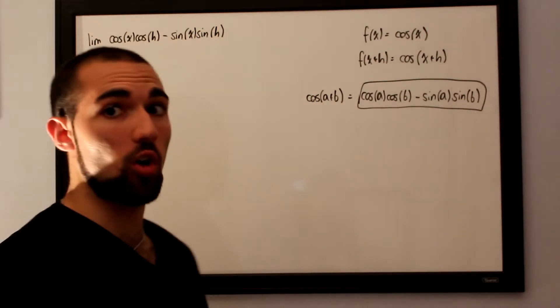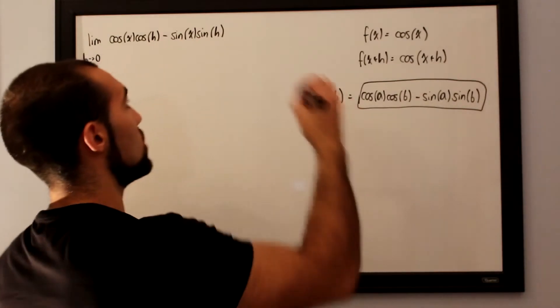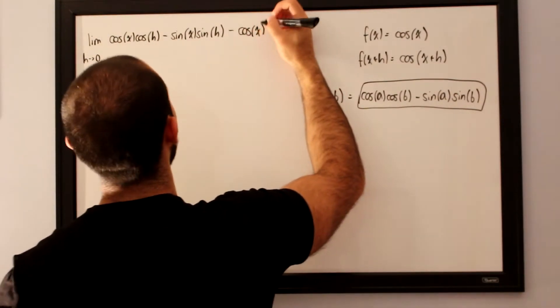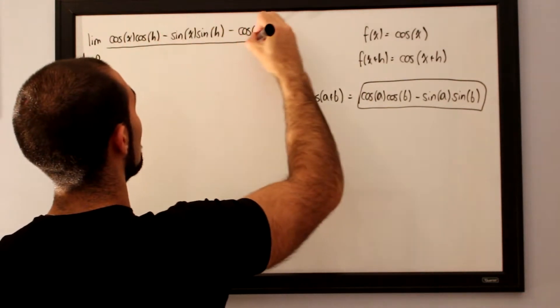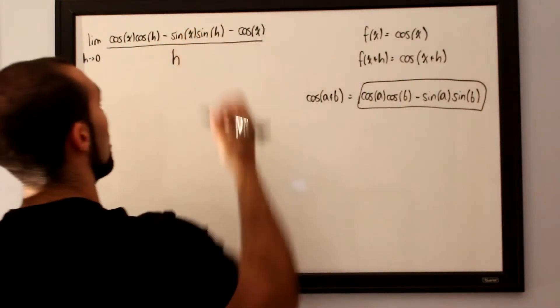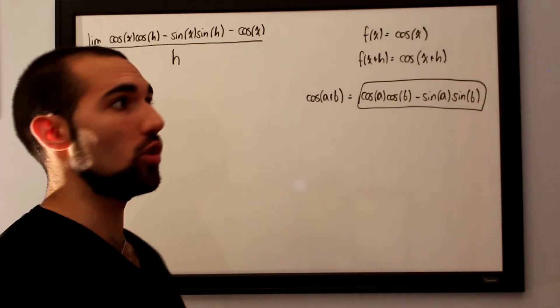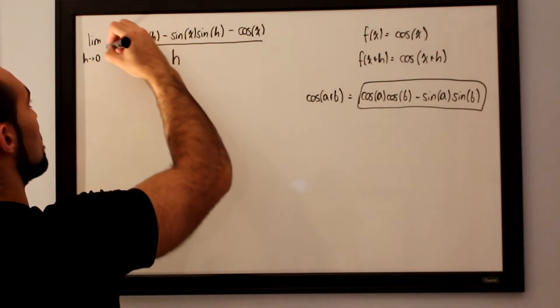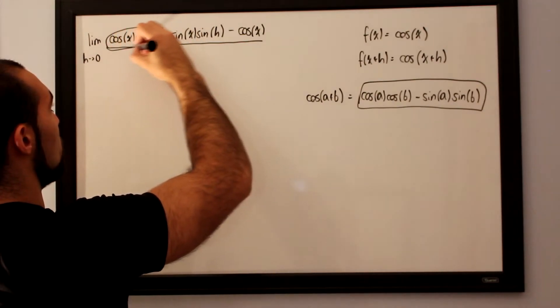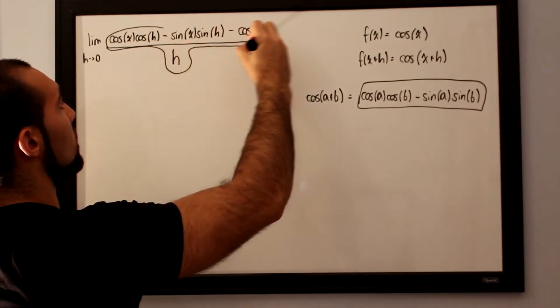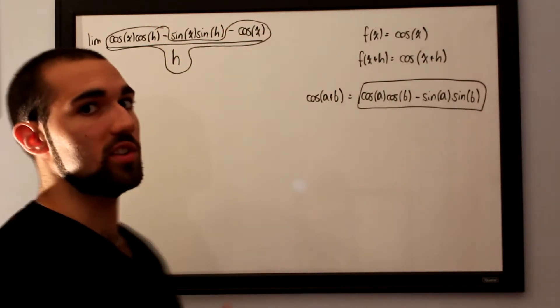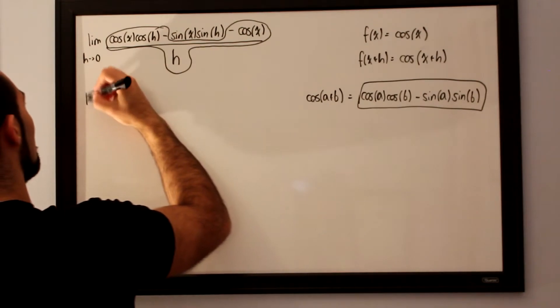And then we want to subtract off our initial function, which is simply cosine of x, very similar to the previous process, all over h. I want to join all of the cosine terms, or the cosine of x terms, rather. So I'll do the exact same thing as I did in the previous example, which is I want to join these, and I want to exclude this right over here and make it a separate term altogether.